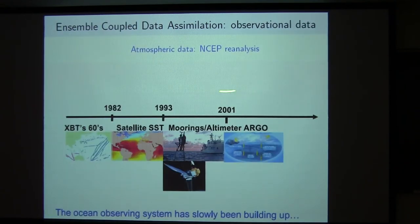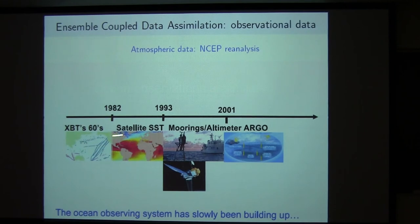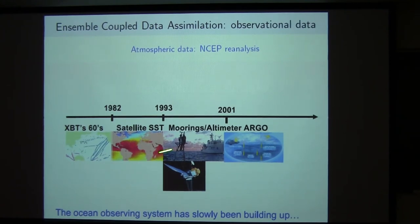The data we assimilate in this system: for the atmosphere component, we do not assimilate in-situ observation data directly — we take the NCEP analysis as the observations. But for the ocean, we do assimilate different types of available ocean observations, such as XBT-type observations, and later satellite SST, Argo, and others. We should be careful because the observation system change introduces some uncertainty into the analysis, but right now we haven't addressed that problem and just use all available observations in the assimilation system.